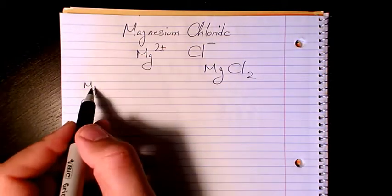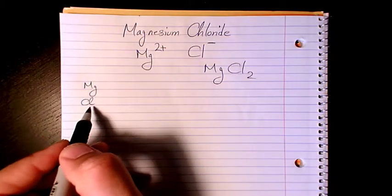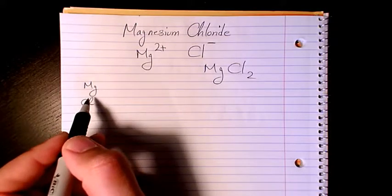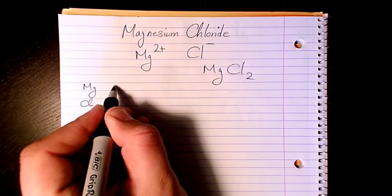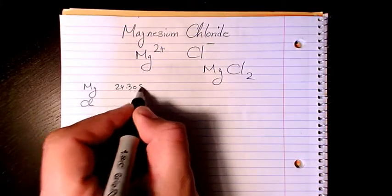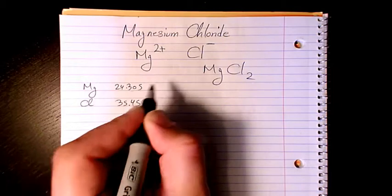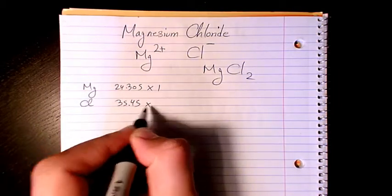So we have 24.305 and here we have 35.45. So Mg we have one, chlorine we have two.